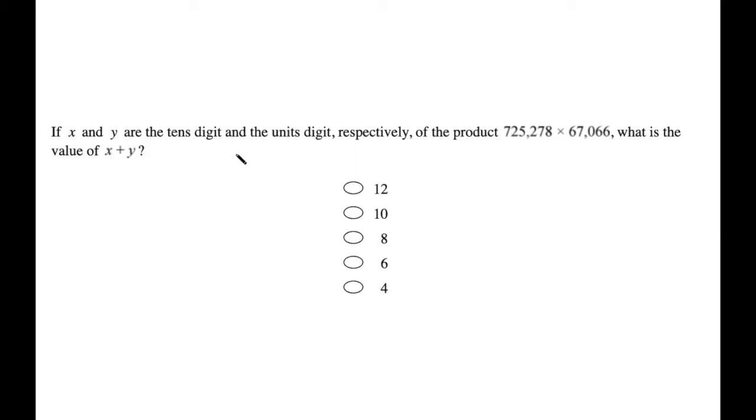If x and y are the tens digit and the units digit, respectively, of the product 725,278 × 67,066, what is the value of x plus y?